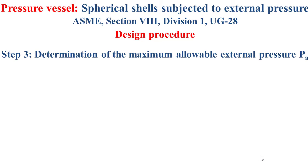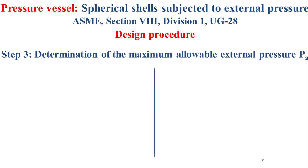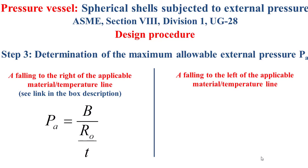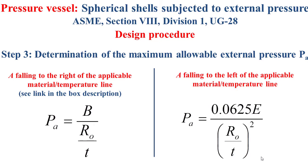Step 3 is about the determination of the maximum allowable external pressure, denoted by PA. We have two cases. Case 1 is when Factor A falls to the right of the applicable material temperature line — in this case, we can easily determine Factor B, and based on Factor B, we determine PA using the formula shown on the left of the slide. Case 2 is when Factor A falls to the left of the applicable material temperature line — in this case, it is impossible to determine Factor B, so PA is determined without Factor B using the formula shown on the right of the slide.